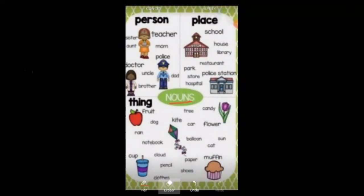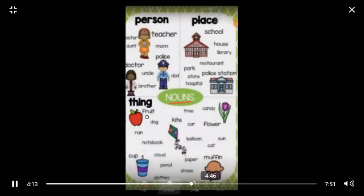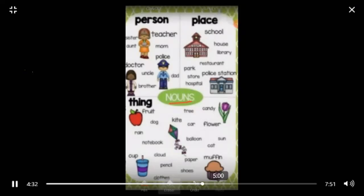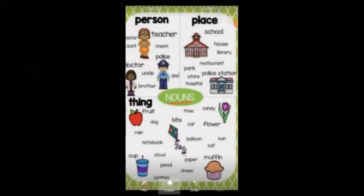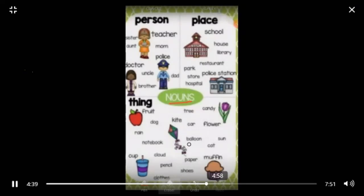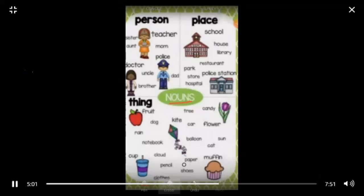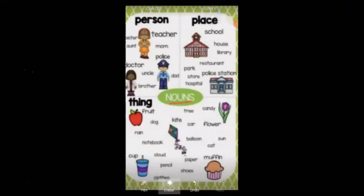Then next we have things — fruit, dog, rain, notebook, book, cup, cloud, pencil, clothes, tree, candy, flower, car, kite, balloon, sun, cat, muffin, paper, shoes. All these are also coming under nouns. They are naming words for the different things that we see around us.